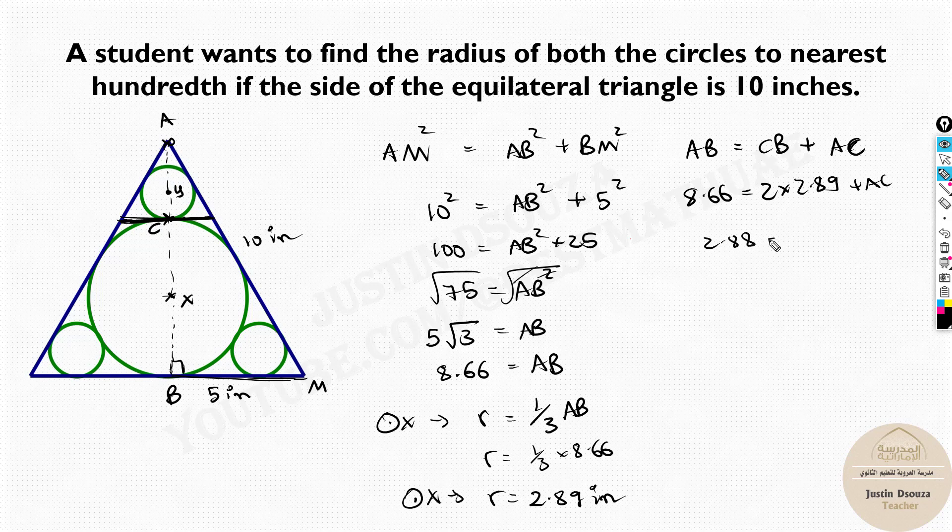And we have 2.88 as the height of AC. 2.88 equals AC. We found AC. We know 1/3 of this, 1/3 of AC, would be the radius of circle Y.